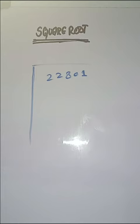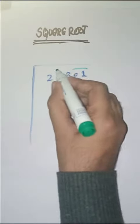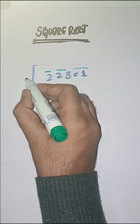We have to find square root of 22801. So first step is we have to make pairs from right to left like this. So first we have to solve 2, we start with 1.